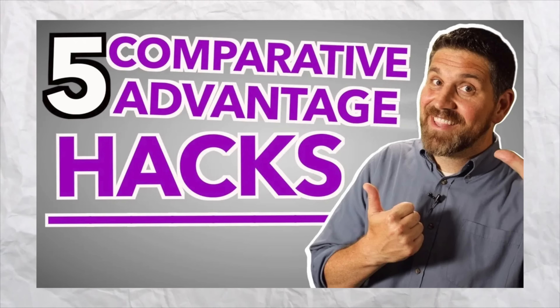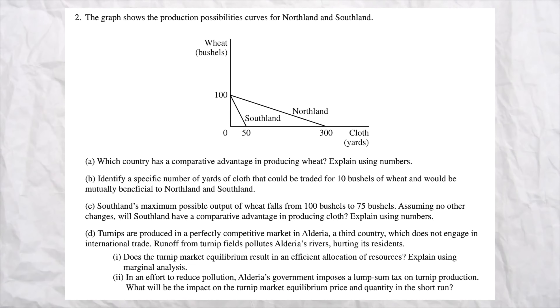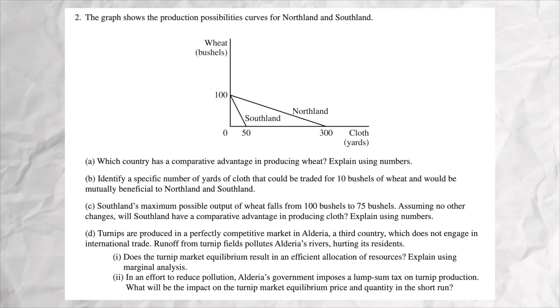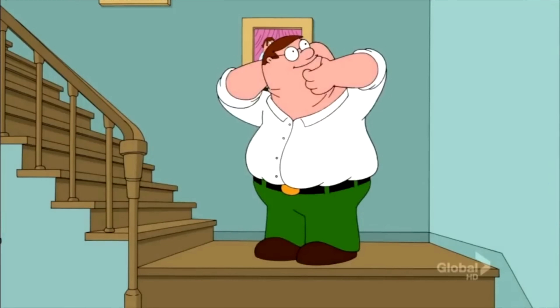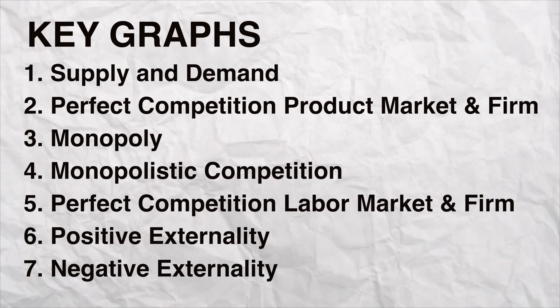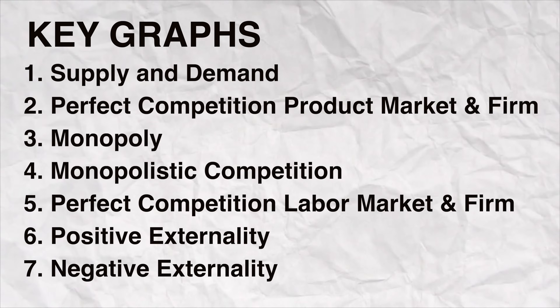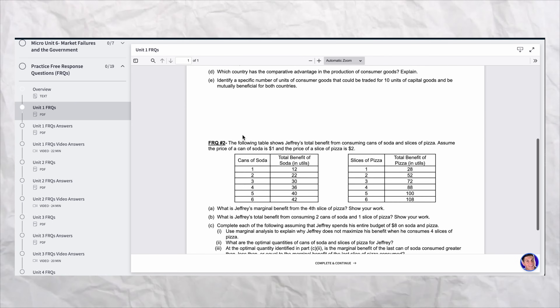For years I would remind students that comparative advantage had never been asked on the free response in the AP micro exam, but they put one in there last year. So be sure to add the skill of finding comparative advantage and the terms of trade to the concepts you need to cover. Most importantly, make sure you feel 100% comfortable drawing these key graphs. Even if you don't understand anything on the free response, drawing the correct graph will usually give you a few points. But really, the best advice I can give is to practice — sit down and do the released free responses from the College Board or the free responses in the ultimate review packet.